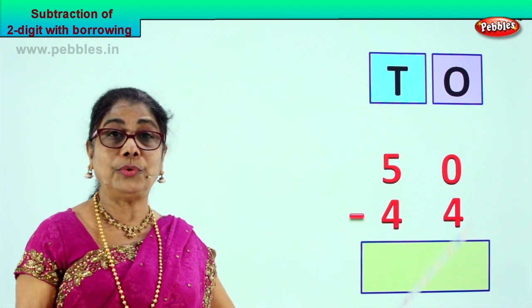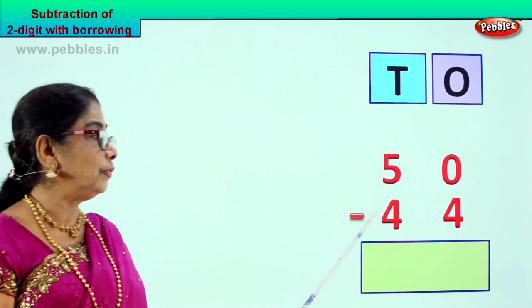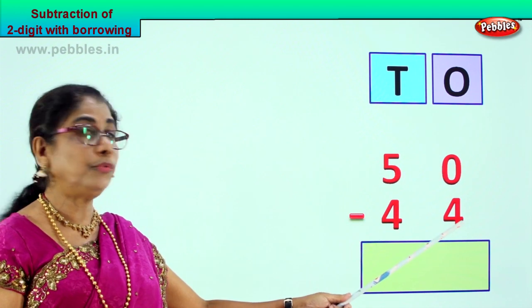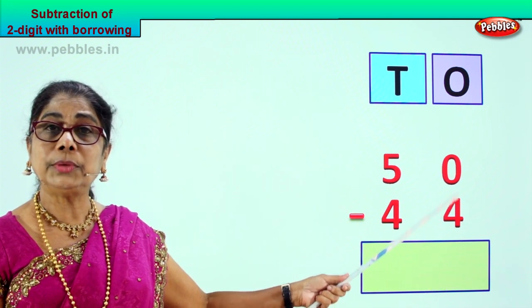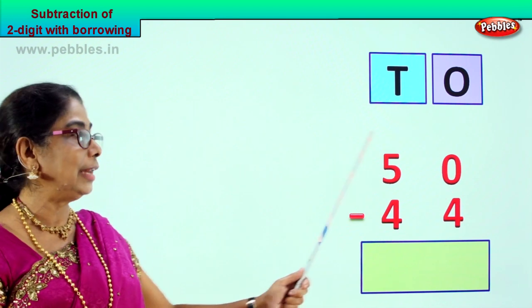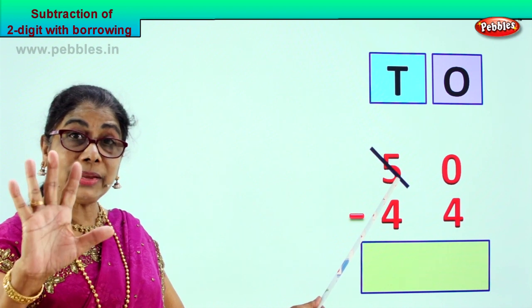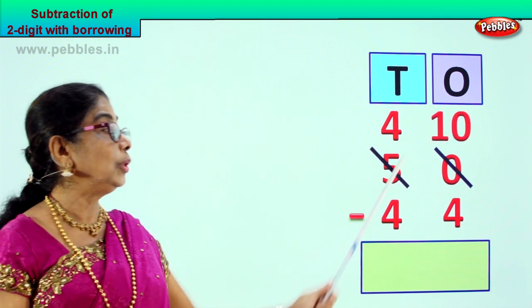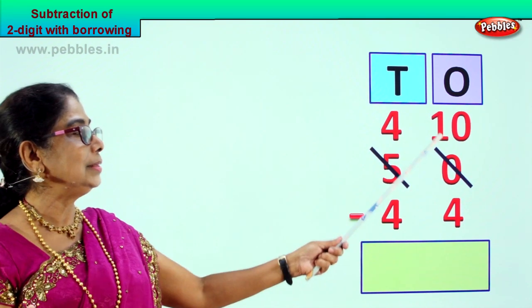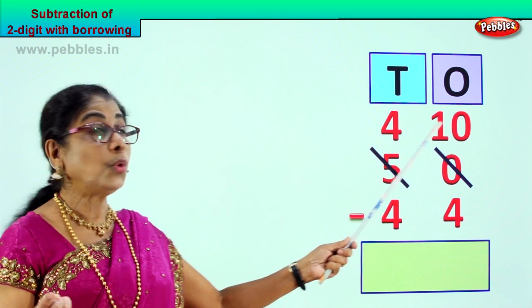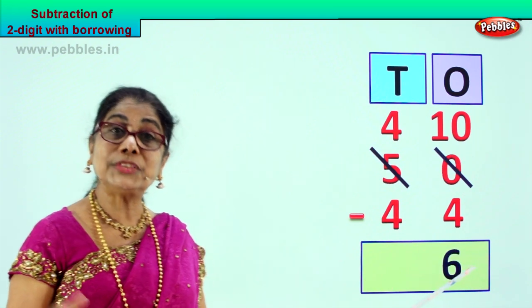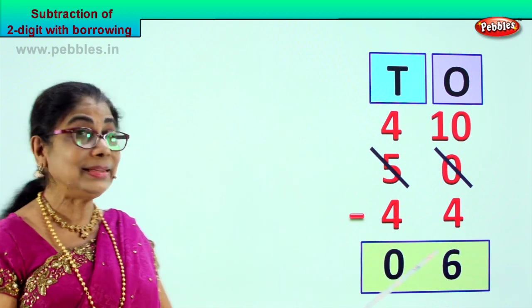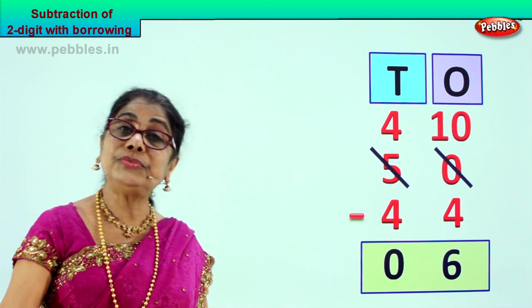Let's go to another sum: 50 minus 44. 5 tens, 0 ones, 4 tens, 4 ones. Let's go to the ones place and borrow — you have 0 here and 4 here. You cannot take away 4 from 0, there is nothing there. So we borrow 1 ten from the 5 tens. We borrow 1 ten — the balance is 4 tens. The 1 ten we bring it here. So 10 minus 4 is 6. Here you have 4 tens and 4 tens — 4 take away 4 is 0. So your answer is 06, and 50 take away 44 gives you 6.